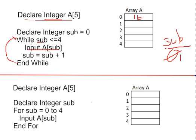When we loop back up, a test occurs. We will be testing is sub less than or equal to four. Sub is one, so that's a true statement. Back into the loop, and we'll input into A at one this time. Let's say seven was keyed in.